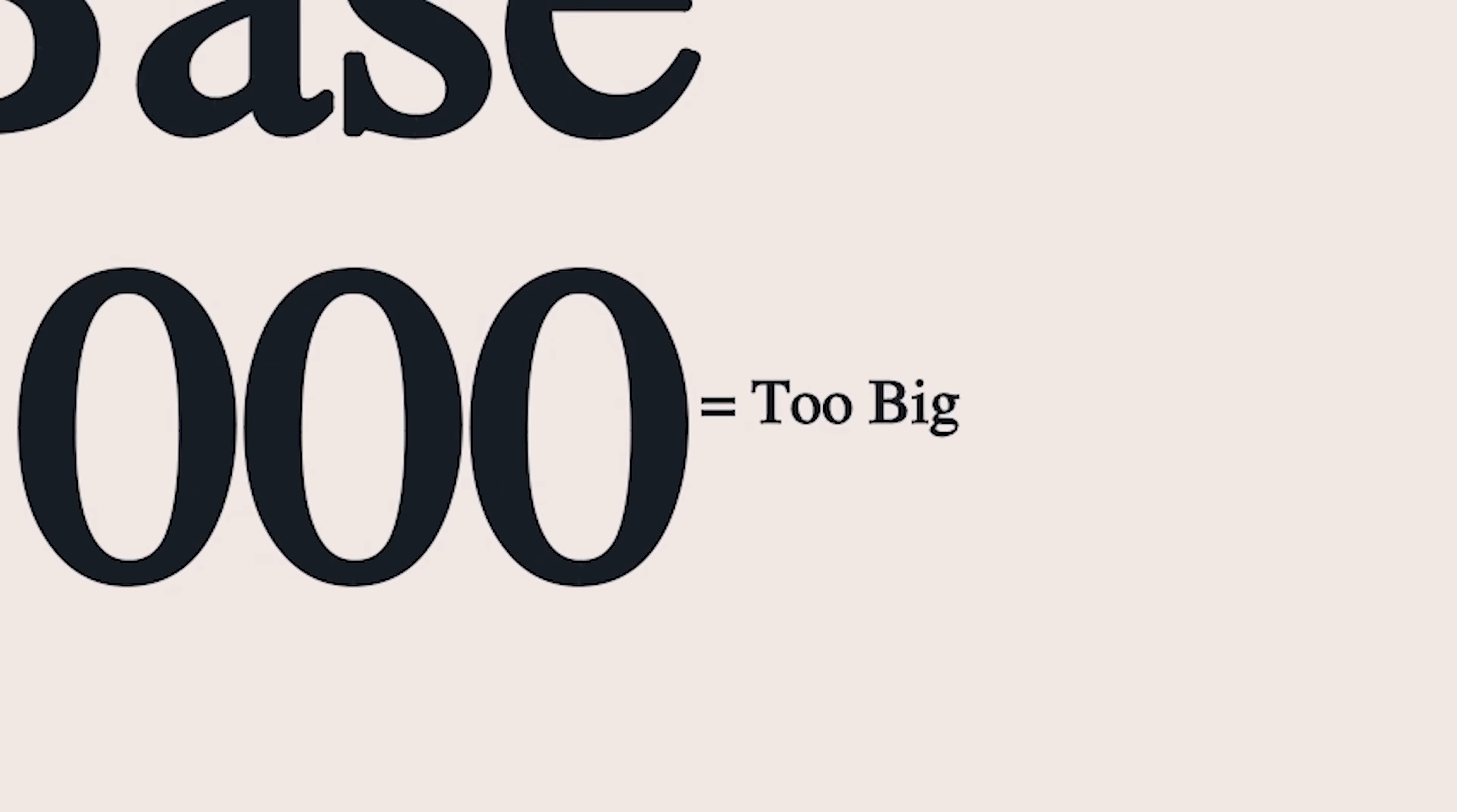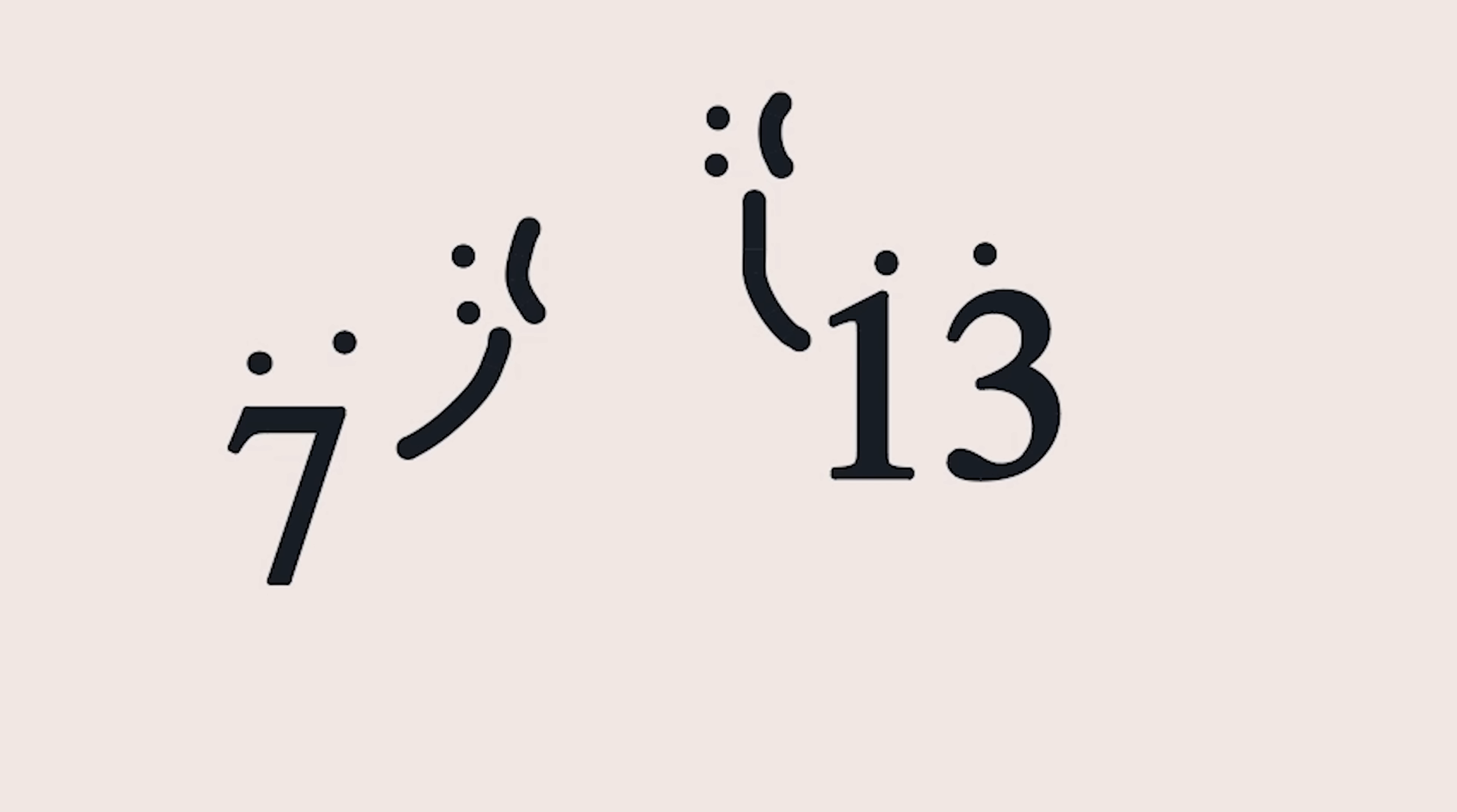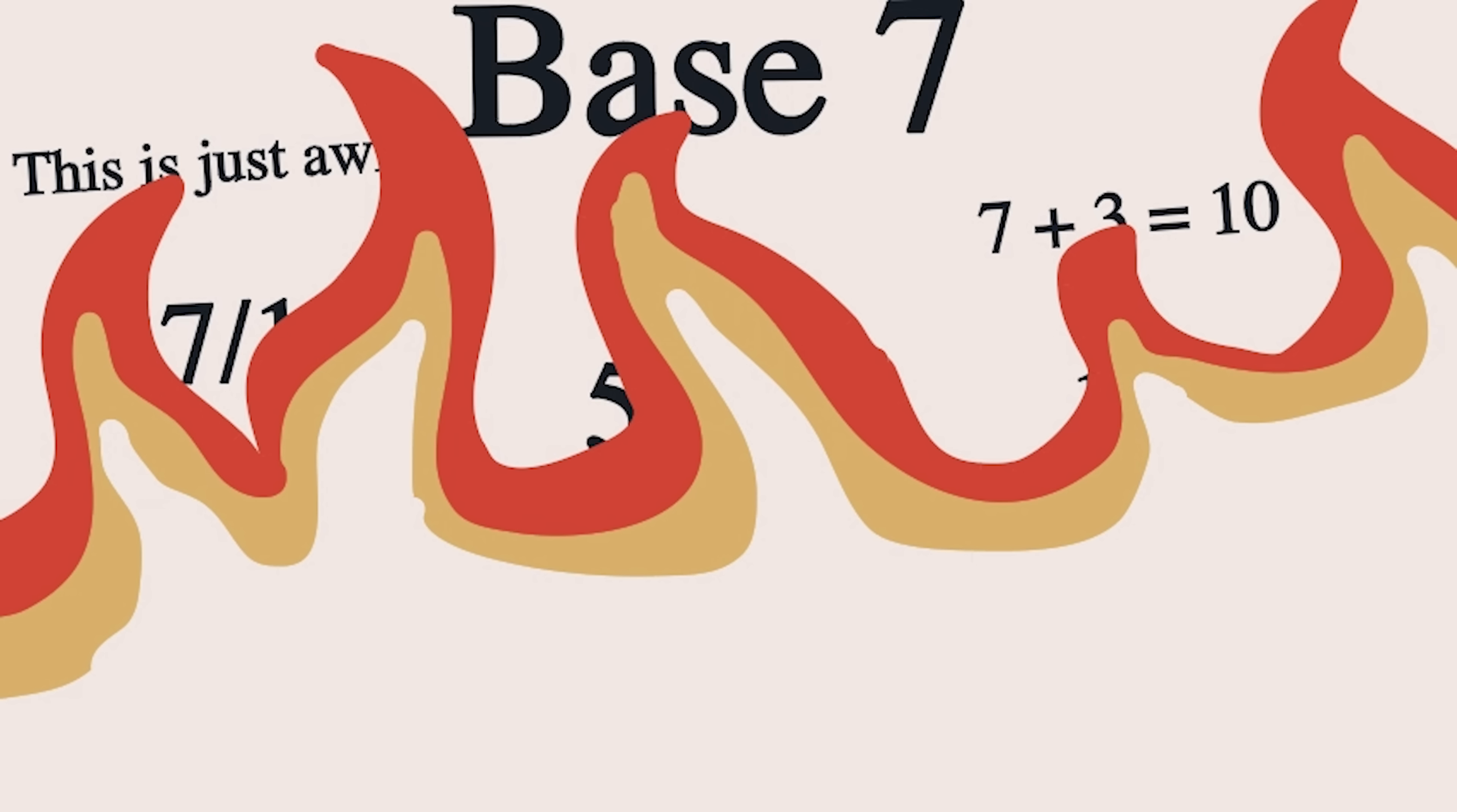On the other hand, two big bases are bad too, because you'd have to memorize a lot of symbols to use them. One other thing that can make bases bad is lack of factors. Base 7 or 13 would be good if they were more easily divisible. Try to divide a base 7 number by anything save 7, and you will be in for a very bad time.